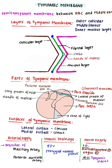Surfaces of tympanic membrane: It has 2 surfaces — lateral surface and medial surface. The lateral surface is concave. The medial surface is convex. The point of maximum convexity is called the umbo.